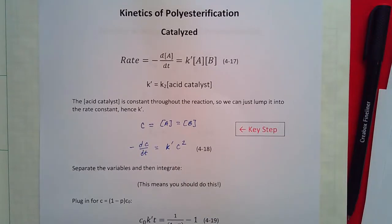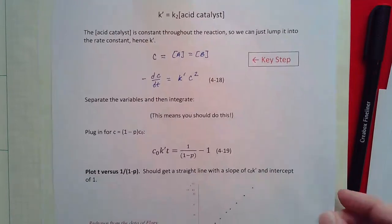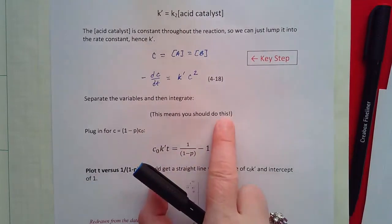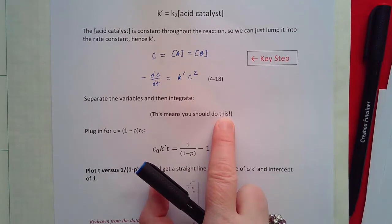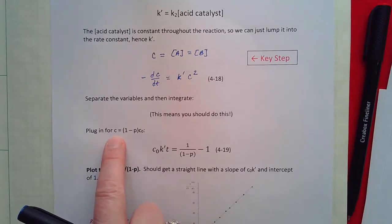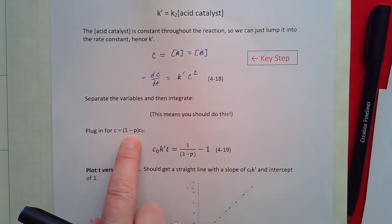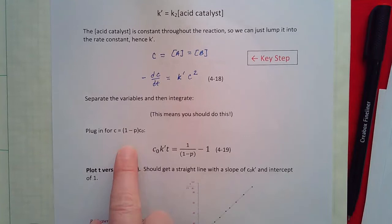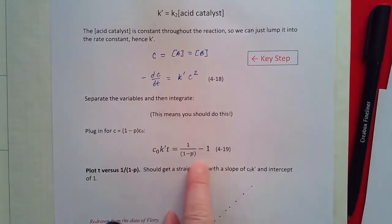We can separate the variables and integrate and you should do this, separate the variables and integrate. If you do that and then plug in for c equals 1 over 1 minus p you get equation 4-19.